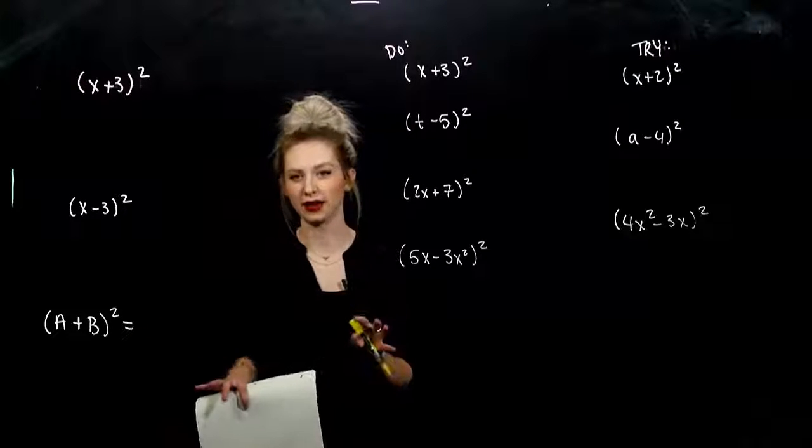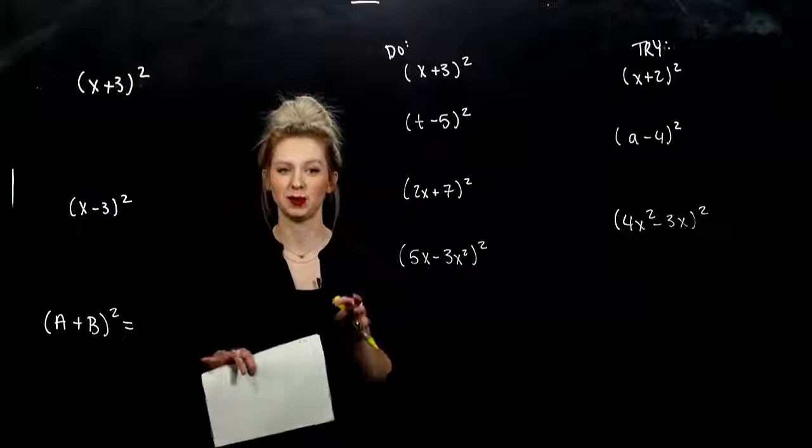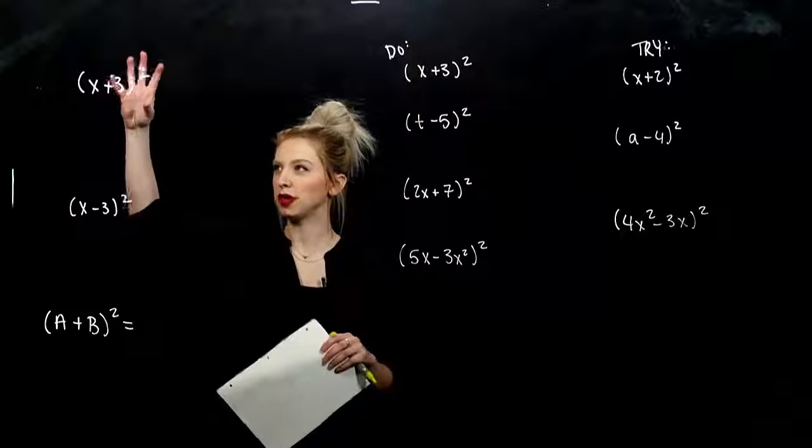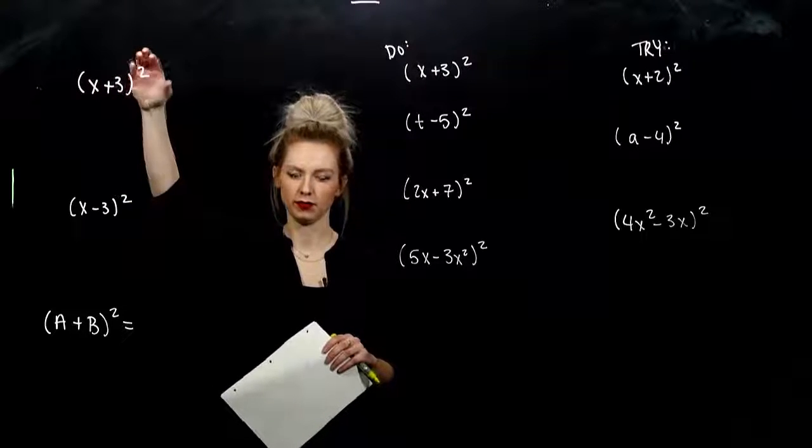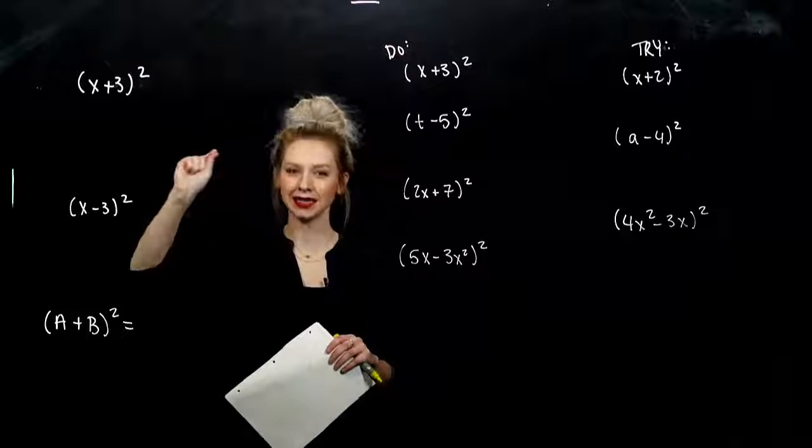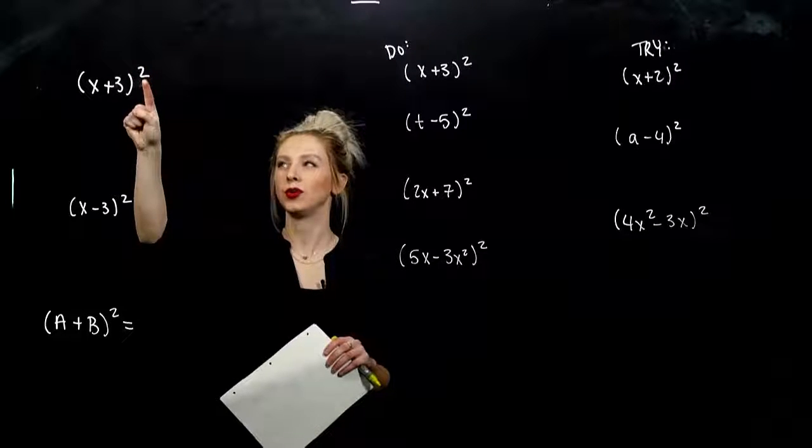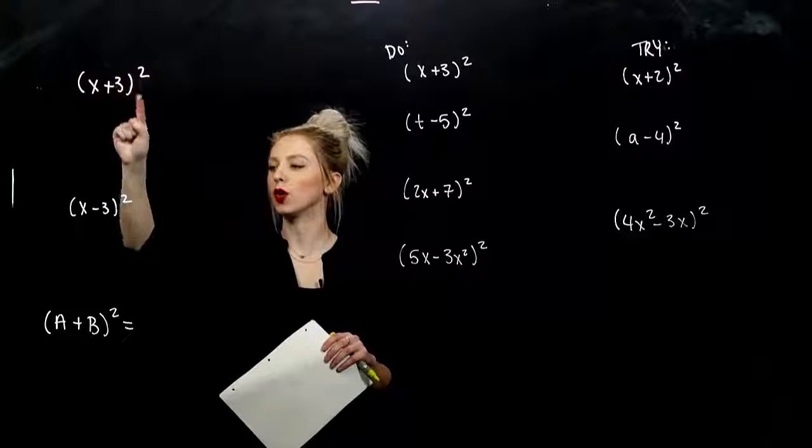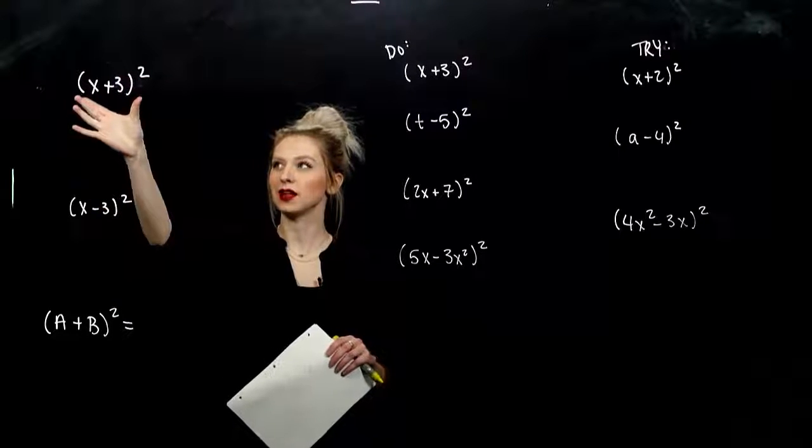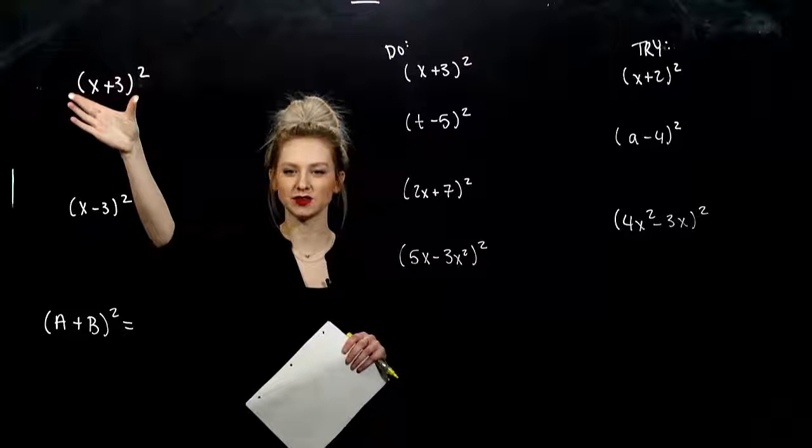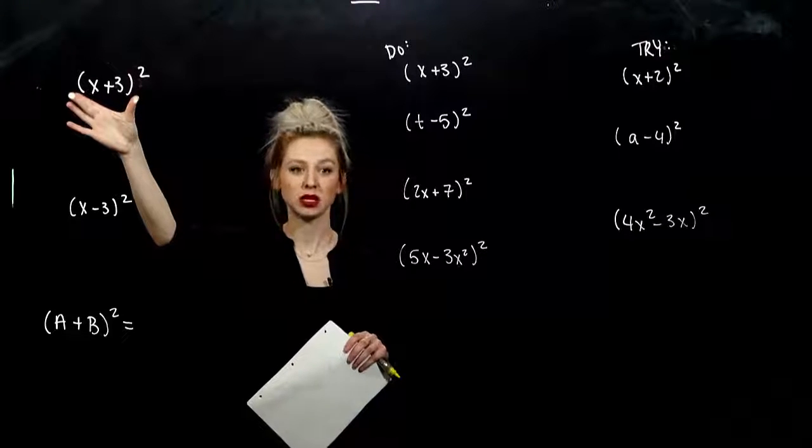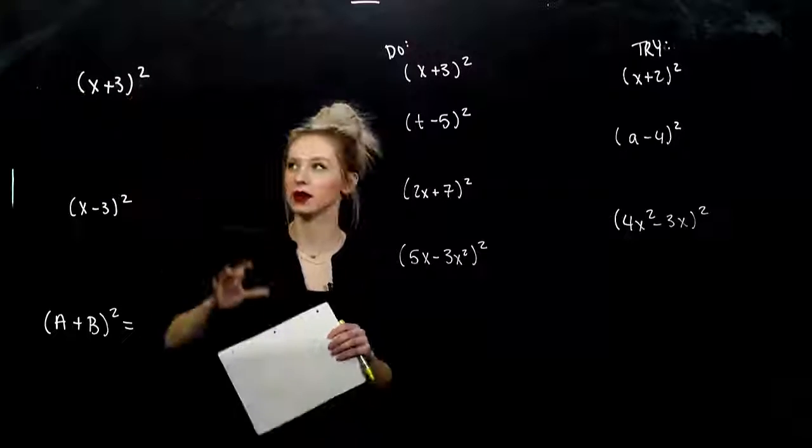One really important fact in algebra is when we look at this binomial squared. We cannot distribute the two over a sum or over a difference, because what does this tell us? Our base attached to the two. What is the base for that exponent? X plus 3, that entire quantity.